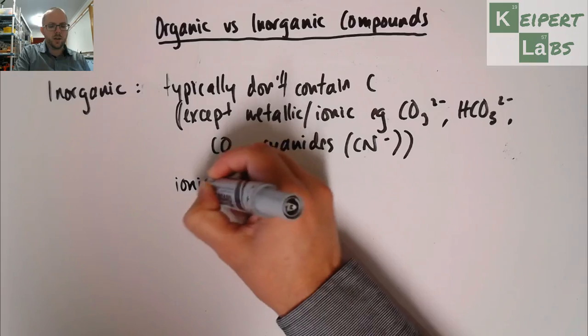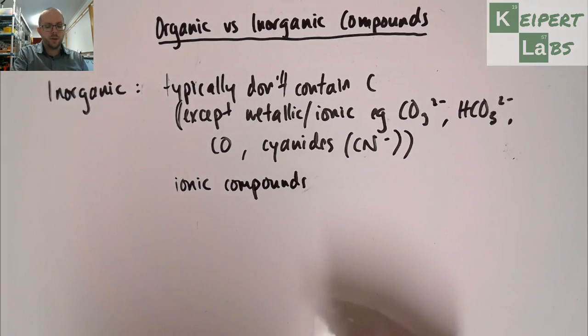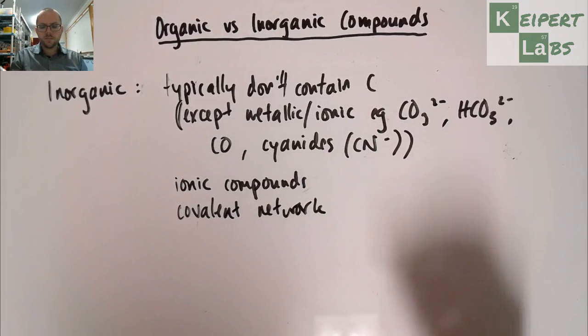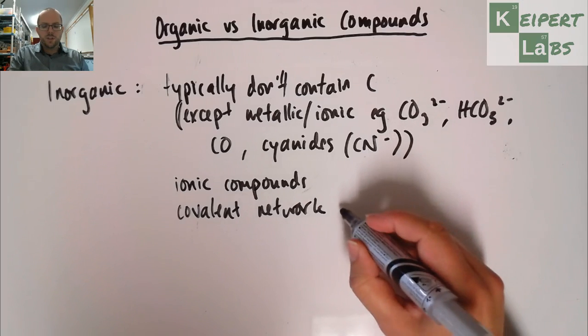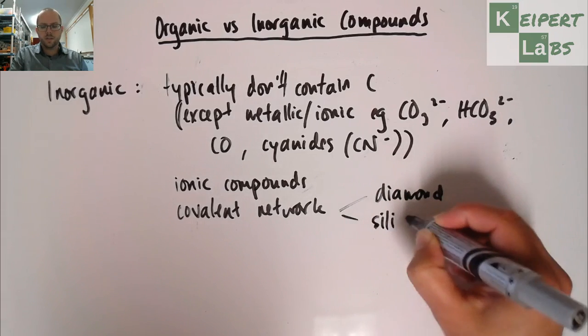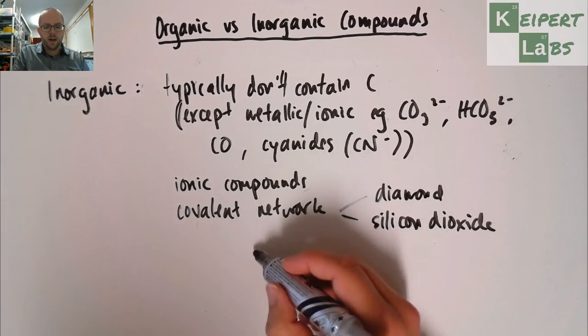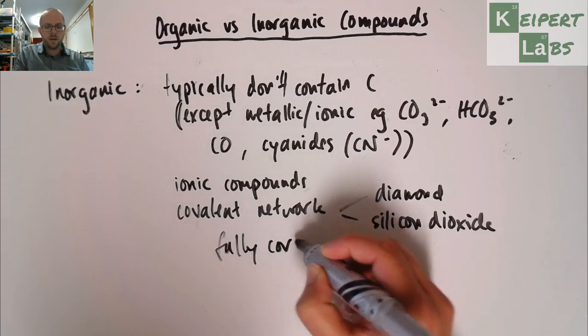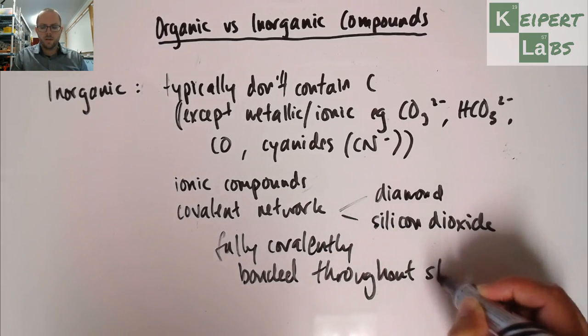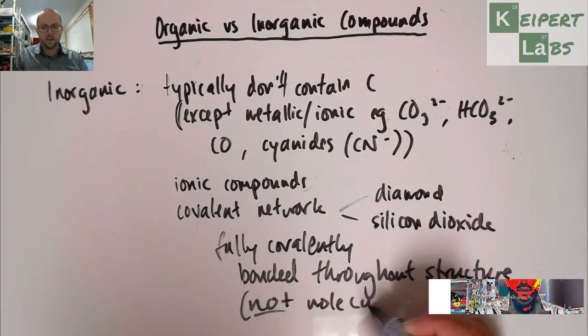That often would include ionic compounds. It also includes some other types of covalent compounds called covalent network substances, which we haven't really looked at in a great amount of detail in the past, which is things like diamond or silicon dioxide in the case of sand. So what they have is that covalent network substances are fully covalently bonded throughout the structure, so not in molecules, not molecular.